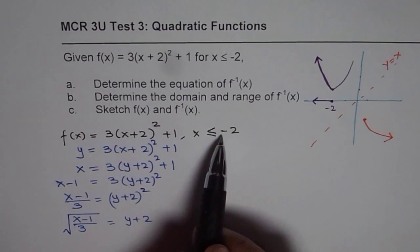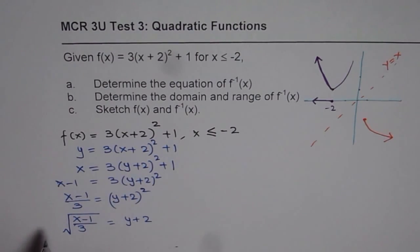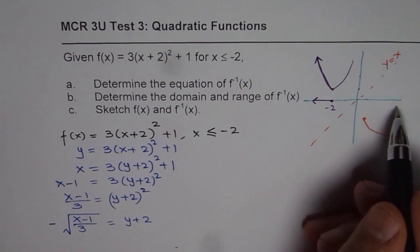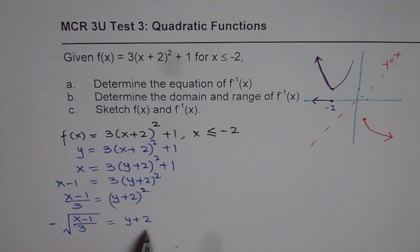Now, since our domain is restricted to negative, we will take only the negative value. The lower half, not the upper half, that is what we are trying to say.